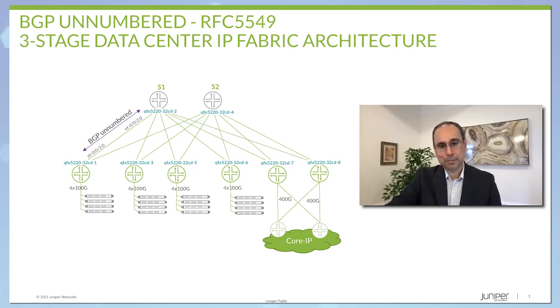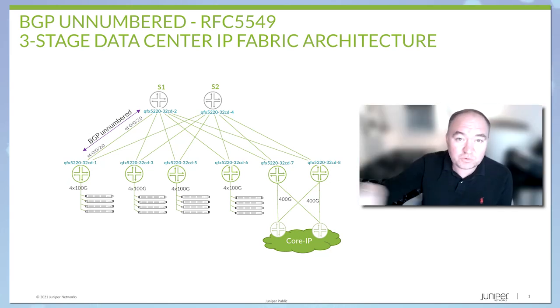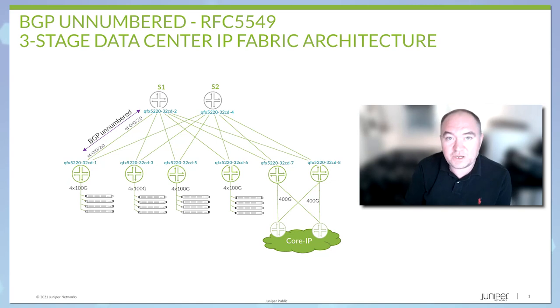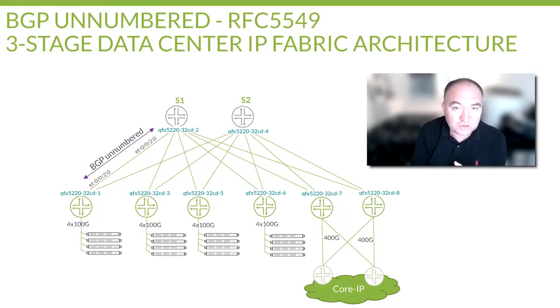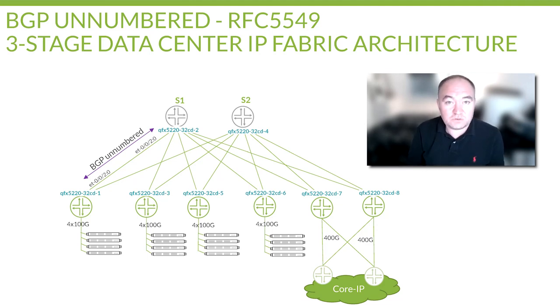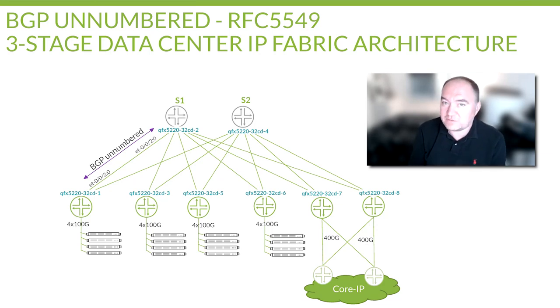Instead of specifying any of the remote IP addressing for the BGP peering between the leaf and spine, in the case of BGP unnumbered we are just specifying the interfaces that are going to be used for the peering purposes. It's definitely simplifying day-to-day operations — whenever we have to plug in a new leaf device into the existing fabric, we'll just specify the interfaces to be used for peering. That's definitely easier than specifying your neighbor's IP addresses.